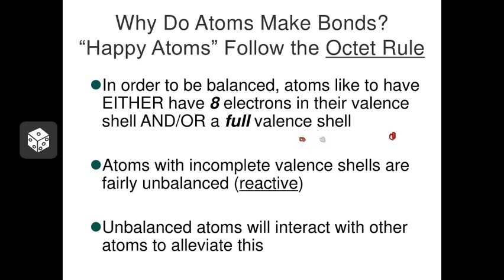Other atoms are bigger. Carbon, for instance, has six electrons — two in the first shell and four in the second shell. The second shell can hold four more to make eight. A happy atom wants either a full valence shell, or if it can't totally fill it, eight is the magic number. Atoms that do not meet the octet rule are reactive, and they want to interact with other atoms to fulfill it.